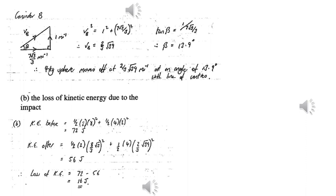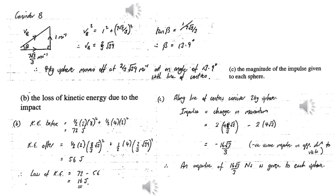Now that we know the velocities of the objects before and after the collision, we can work out the total kinetic energy before the collision, the total kinetic energy after the collision, and hence work out the loss in KE. To work out the impulse, we can work out the change in momentum of either of the spheres, taking care with the direction of the impulse when working out the change in momentum.